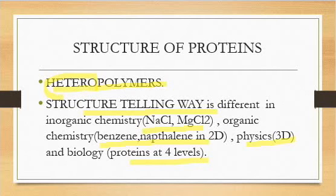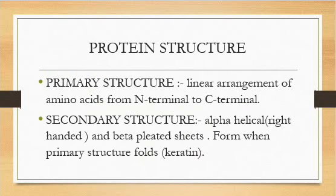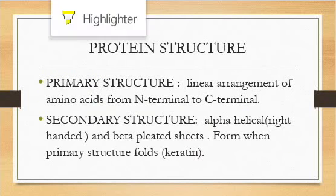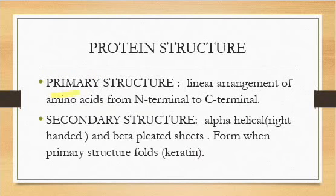If you want to understand the structure of proteins, we have to go through different levels of protein organization. When proteins are organized at different levels, the main levels are 4: primary, secondary, tertiary, and quaternary. Protein structure is very complex, and to understand it, understanding these 4 organization levels is very necessary.